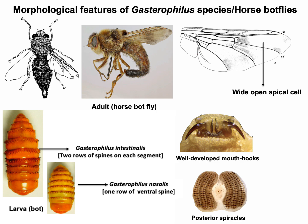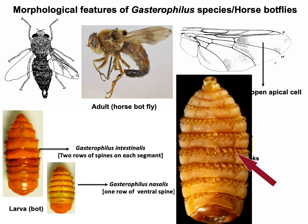The bodies of the larvae are usually reddish-orange in color, cylindrical in shape, and around one to two centimeters in length. Mouth hooks of the larvae are very well developed. Posterior spiracles of the larvae are opened by three bent slits in a shallow concavity. Larval instars can be differentiated based on the numbers and distribution of spines on various segments. For example, Gastrophilus intestinalis possesses double rows of spines on each segment, whereas one row of ventral spines is a characteristic feature of Gastrophilus nasalis.